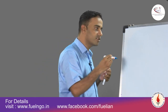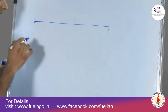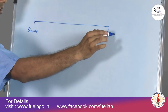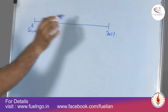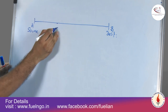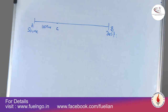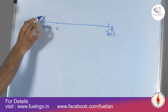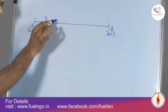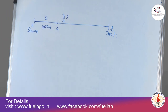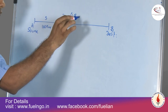For lengthy train-based problems, always draw the figure first. We have source A and destination B. Point C is 100 km from A, where the fault occurs. Original speed is S; at point C the speed reduces to 3/4 of S. Because speed decreases, time increases, and the train arrives 48 minutes late.